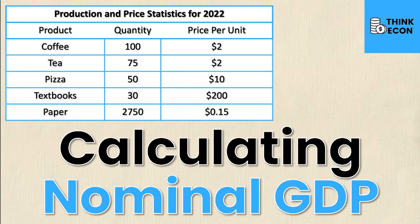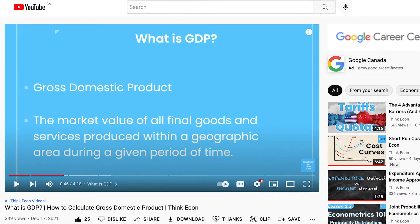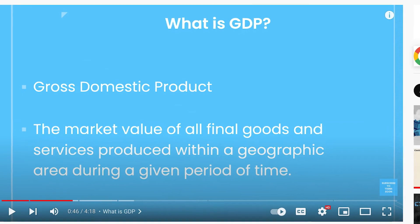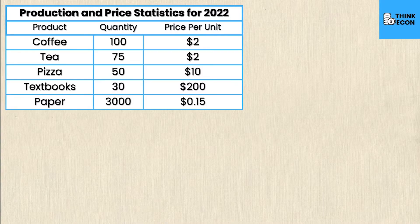In class your teacher or professor may ask you to calculate nominal GDP, in which case they will give you different products, different quantities, and different prices and ask you to determine which belong in the determination of GDP and which do not. So first things first, let's review the definition we used in a previous video to get a grasp on what GDP truly is. The definition we used was: the market value of all final goods and services produced within a geographic area during a given period of time. There are a couple of key things to consider in this definition which we'll look at as we calculate.